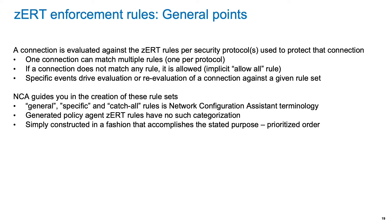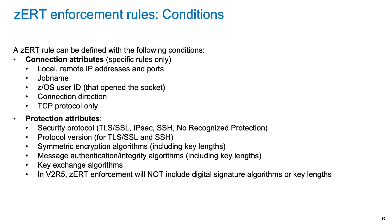ZERT policy allows you to specify conditions in a rule. There are connection attribute conditions and protection attribute conditions. Connection attributes include local and remote IP addresses and ports, job name, user ID that opened the socket, and connection direction — inbound or outbound. With protection attributes you can specify cryptographic details like security protocol. For TLS and SSH you can specify the protocol version and the symmetric encryption, message authentication, and key exchange algorithms. Note that digital signature algorithms are not supported in V2R5, but are planned for the future.